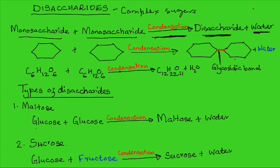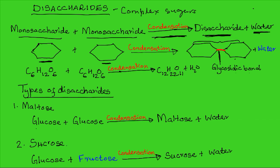We can represent this using symbols. This structure represents one monosaccharide plus another monosaccharide, which are then condensed into one disaccharide. The two monosaccharides in the disaccharide are held together by the glycosidic bond, and a water molecule is lost in the process for this bond to be formed.